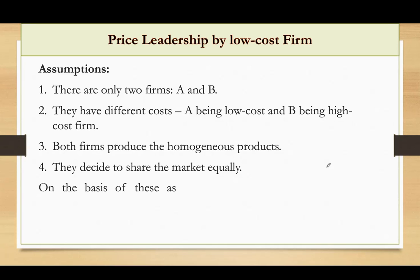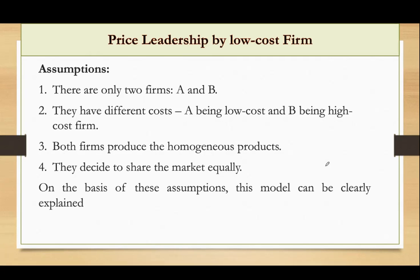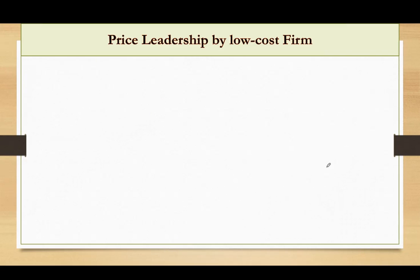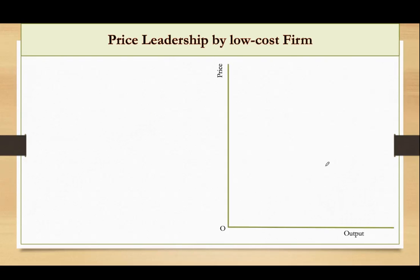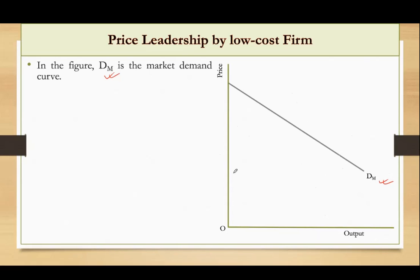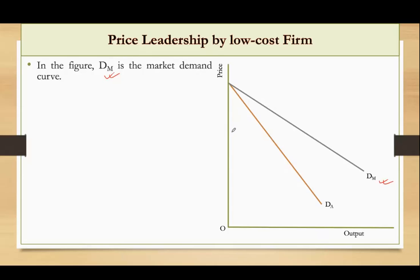On the basis of these assumptions, we can explain this price leadership by low cost firm model with the help of a diagram. Output is measured along the x-axis and price along the y-axis. DM is the market demand curve. There are only two firms, each having the same market share, and DA is the demand curve for firm A.